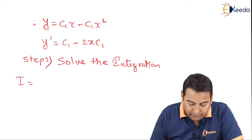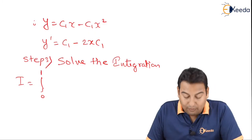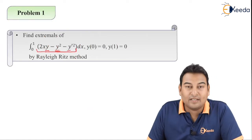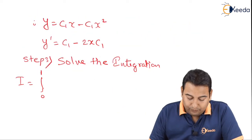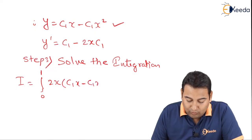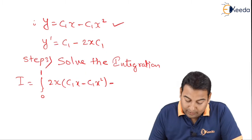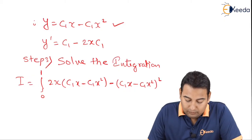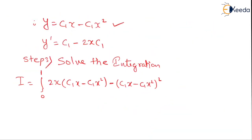Step 3: solve the integration. I = ∫₀¹ (2xy − y² − y'²) dx. Substituting: 2xy = 2x(c1x − c1x²), y² = (c1x − c1x²)², and y'² = (c1 − 2c1x)².